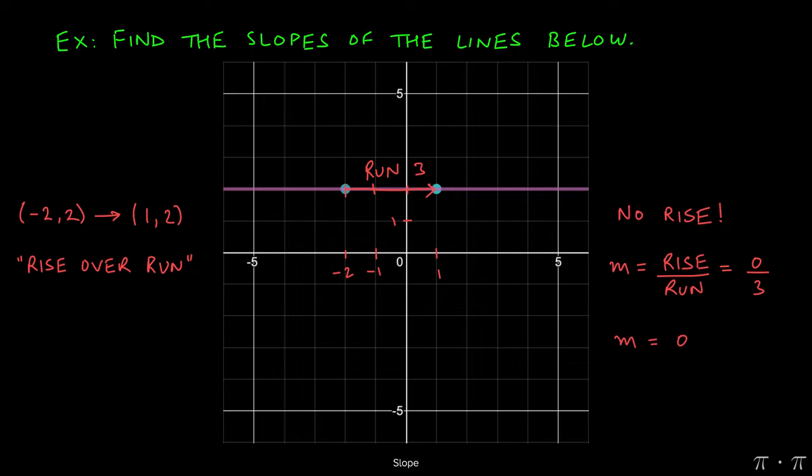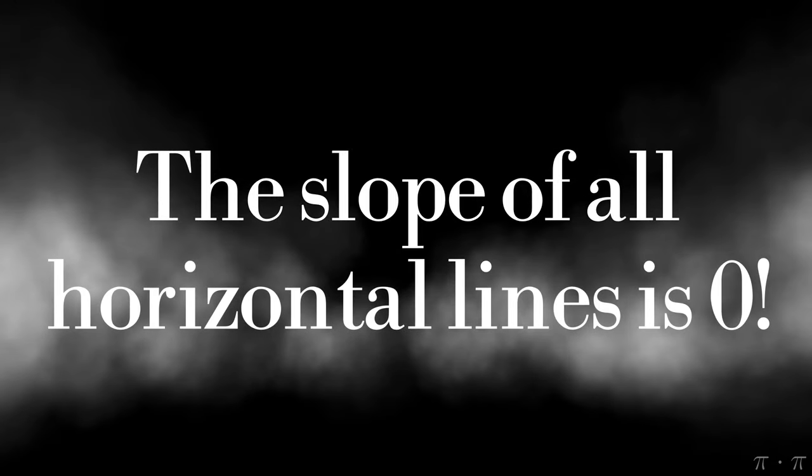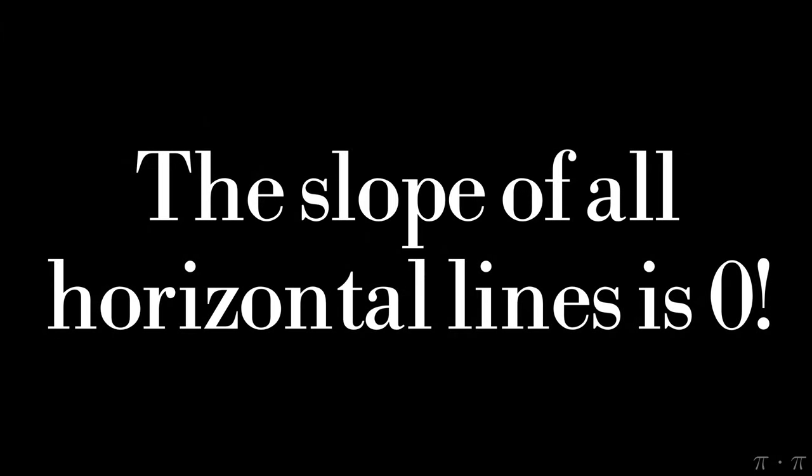So the slope of this particular line, which happens to be horizontal, is zero. Please commit this to memory. This is an extremely important fact for any forward math courses.